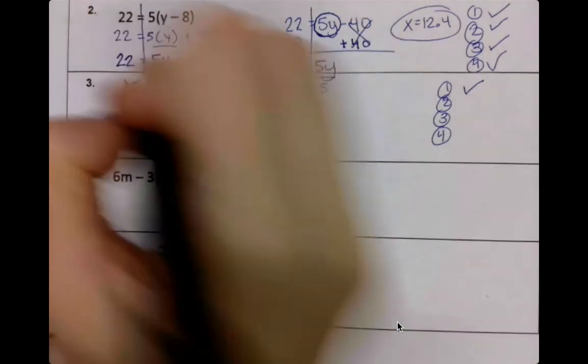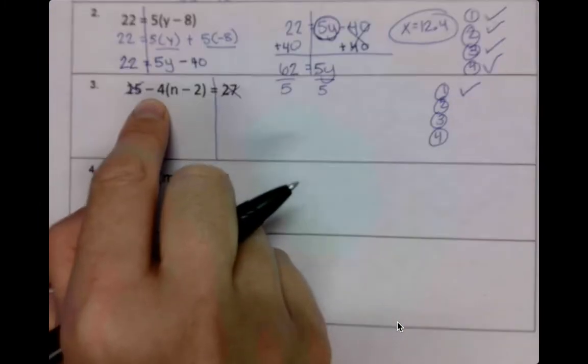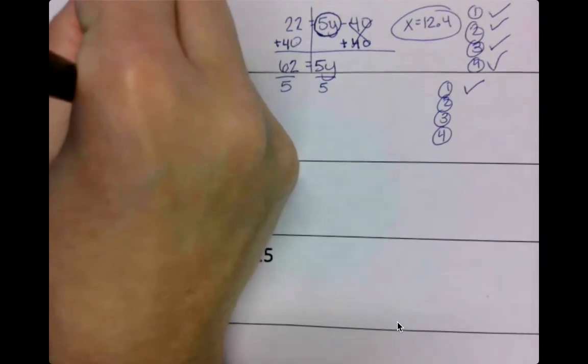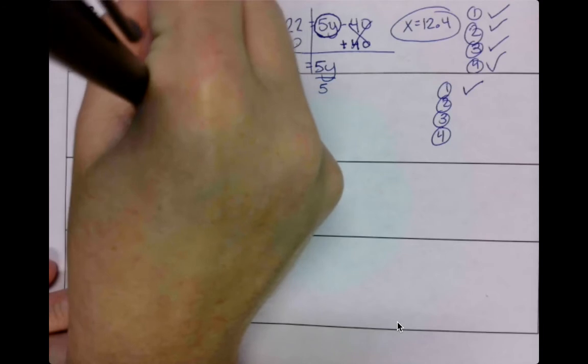So again, 15, don't worry about it. 27, don't worry about it. Just look at -4 and in parentheses n+2. So we have our -4 and our n, plus our -4 and our -2.